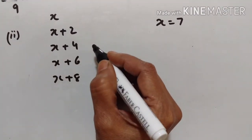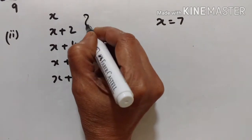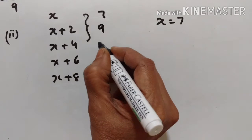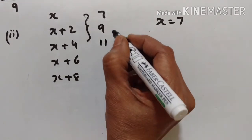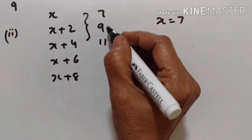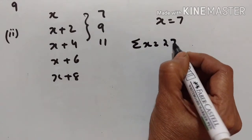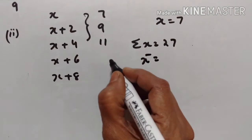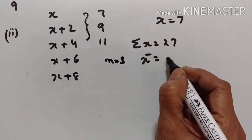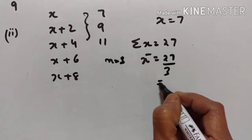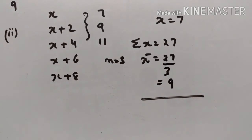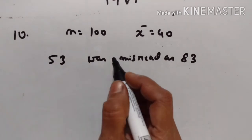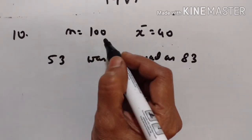Next, find the mean of the first three observations. With x equal to 7: x is 7, x+2 is 9, x+4 is 11. The sum is 27. n is equal to 3, so mean is equal to 27 divided by 3, that is 9.